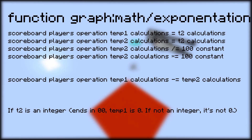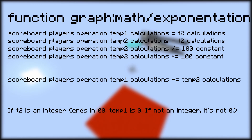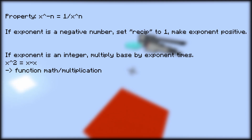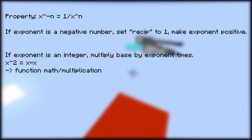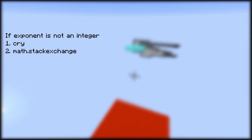Next is exponentiation, which was one of the most painful things to program. First, temp1 and temp2 are set to T2. Then temp2 is divided by 100 and multiplied by 100. Subtracting that from temp1 yields 0 if T2 was an integer, and any other number if it was not. If T2 is a negative number, we set a reciprocal value to 1 and change T2 to positive. If the number is found to be an integer, we can just multiply the base by the exponent times — repeated multiplication using the multiplication library. However, if the number is not an integer, we cry.